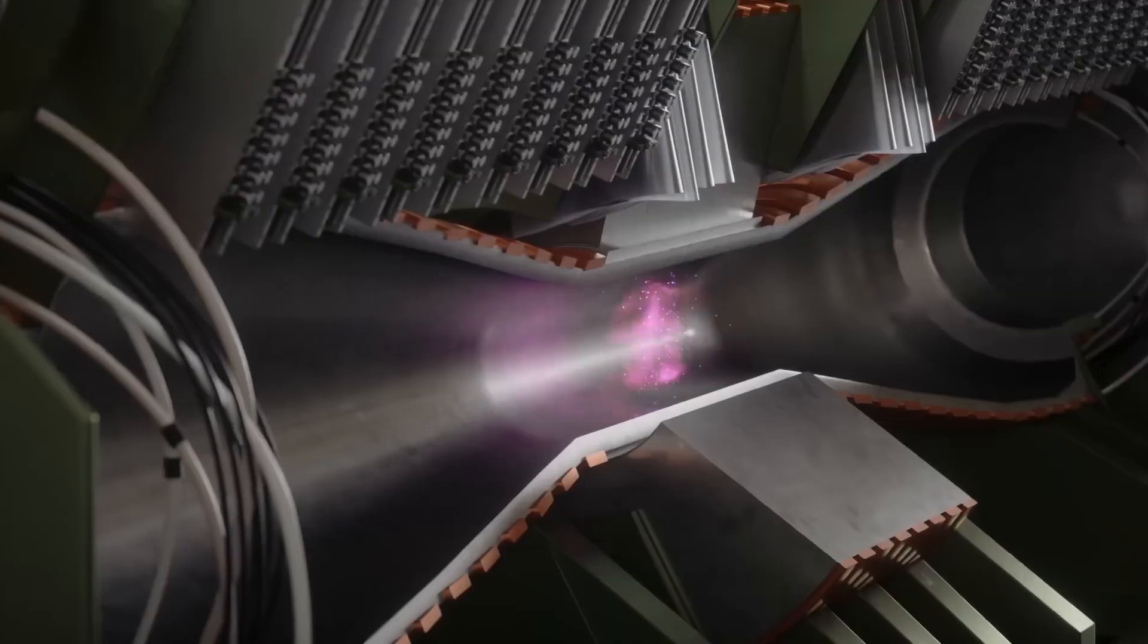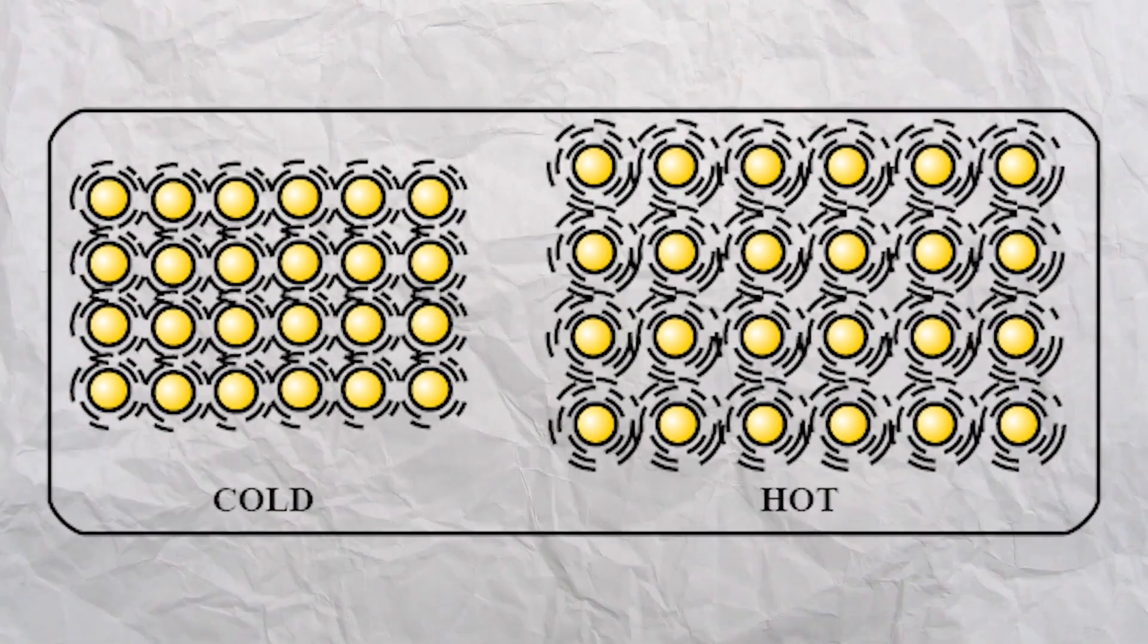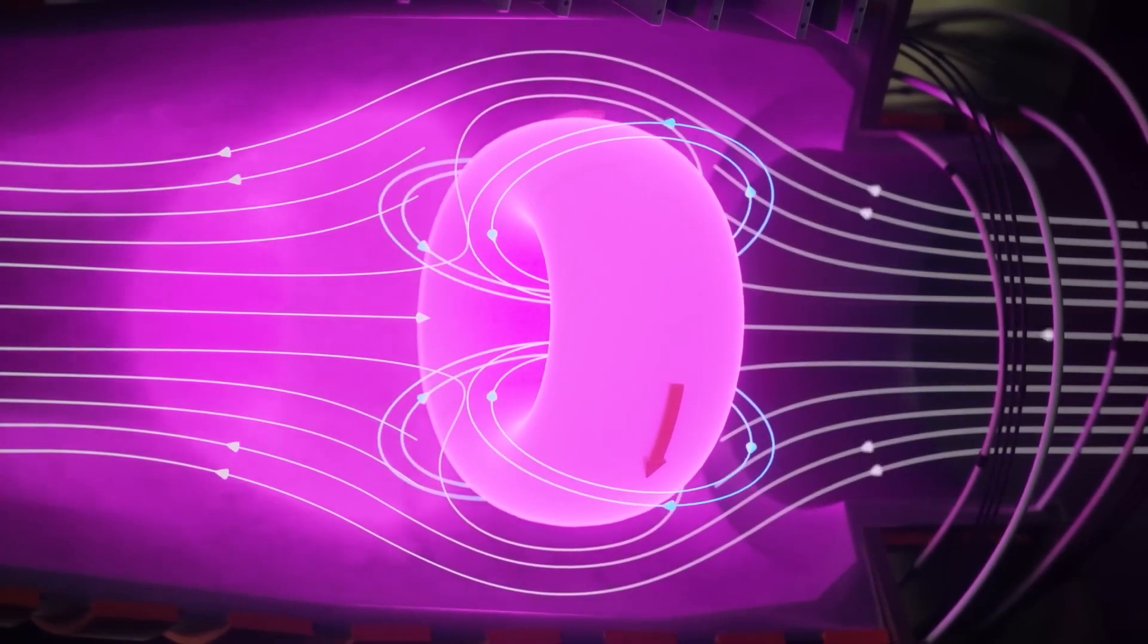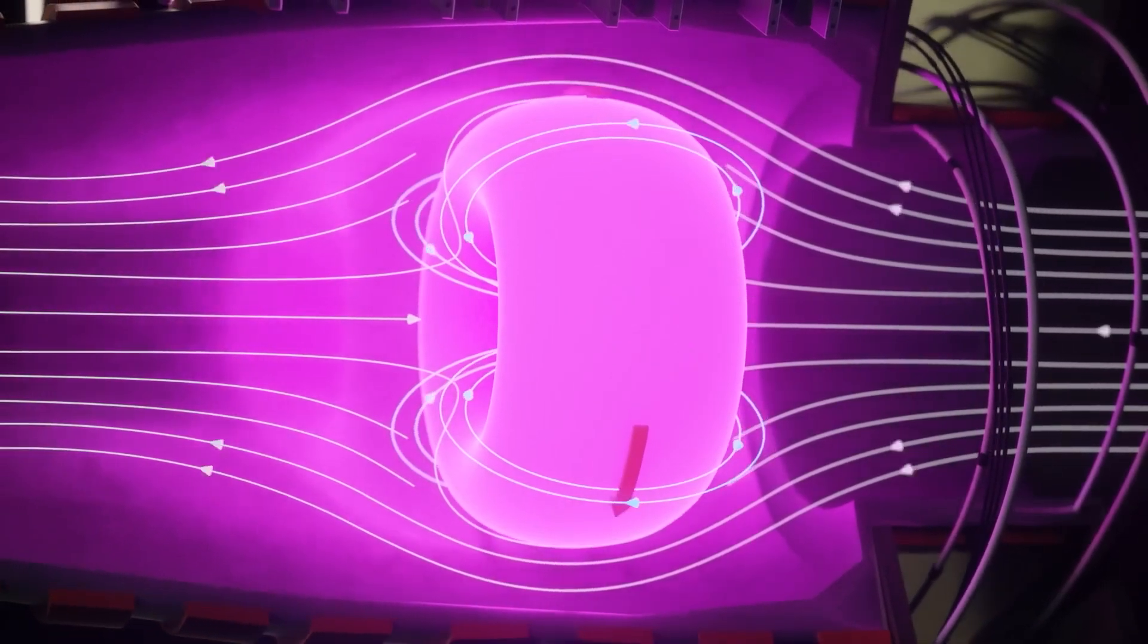When atoms are heated to extreme temperatures, they shed their electrons, forming a charged particle cloud known as plasma. Within this plasma, atoms are in constant motion, vibrating and colliding. As plasma density increases, collisions between nuclei become more likely.